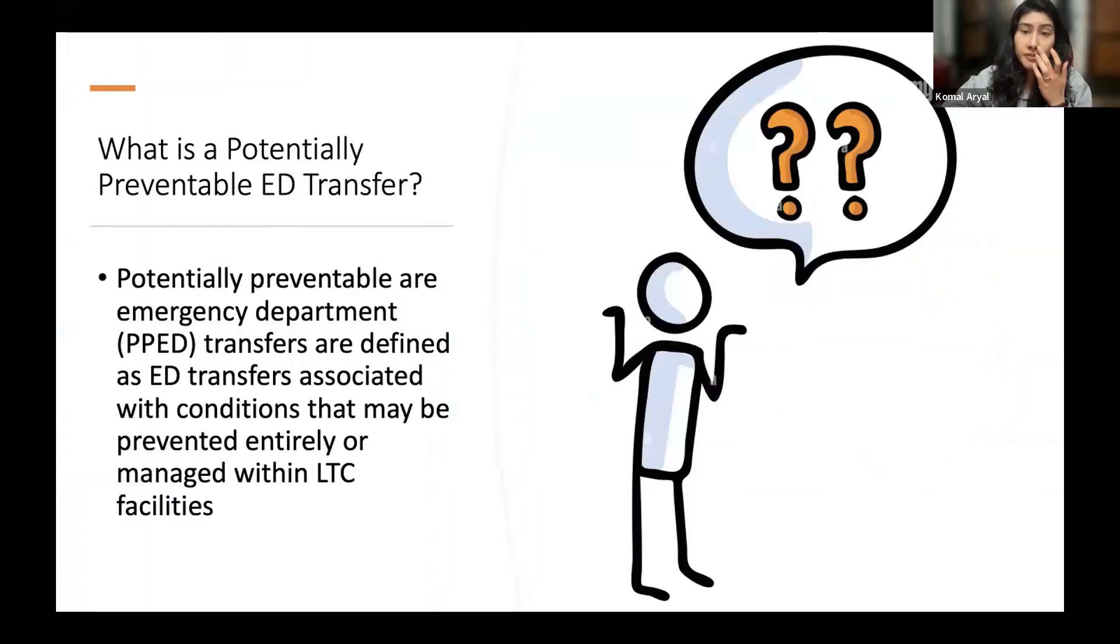So what is a potentially preventable ED transfer? A potentially preventable ED transfer, which is also known as an ambulatory care sensitive ED visit, is defined as an ED transfer that is associated with conditions that may have been prevented entirely or managed better at the nursing home facility.